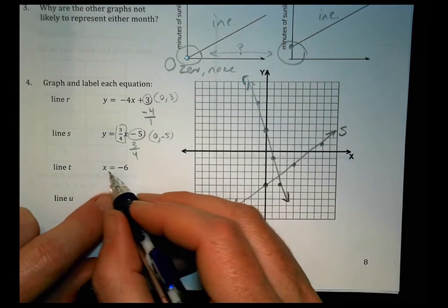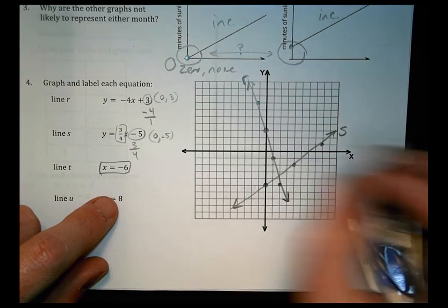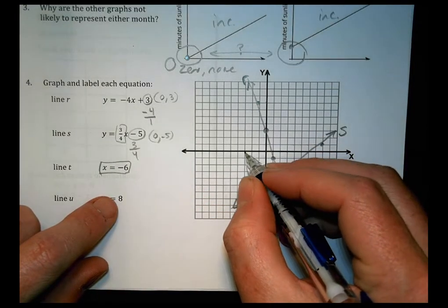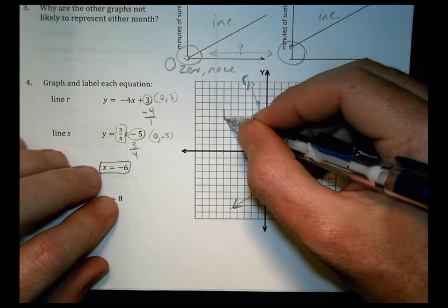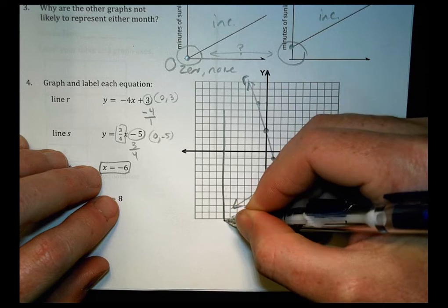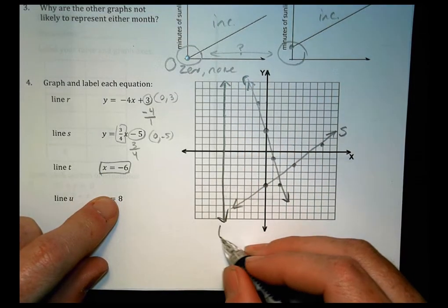For line t, this happens where x equals negative six. So we look over and go, where's negative six at? There it is. One, two, three, four, five, six, right here. So x equals negative six. This line is going to be all the way up and down right there, and that's line t.